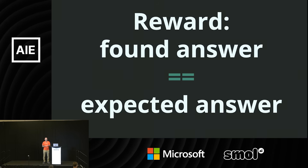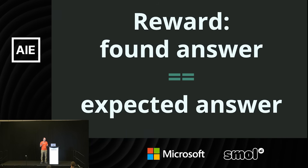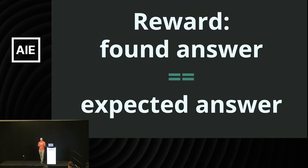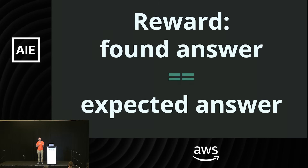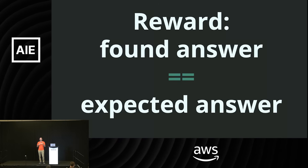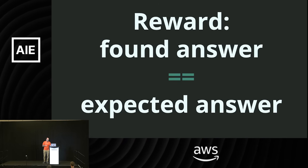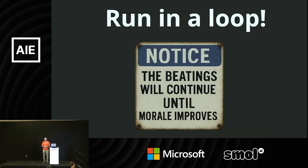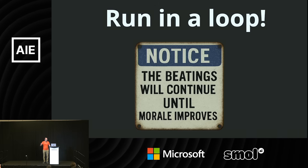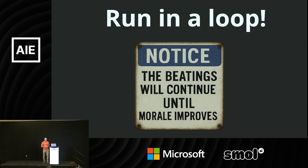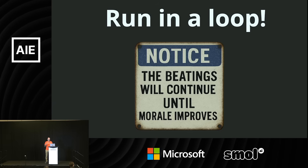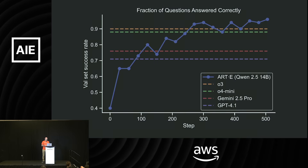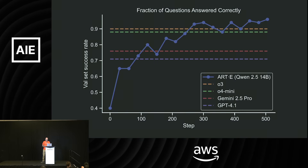Once you have your environment and reward function defined, you basically run a loop over and over again: your agent tries to solve the problem, you figure out if it did well or badly, you reward it if good and penalize if bad. You do this over and over, and hopefully — if everything is set up right — it learns what good looks like, what bad looks like, and starts doing it right. And that's the curve we saw earlier, where it starts getting better over time.